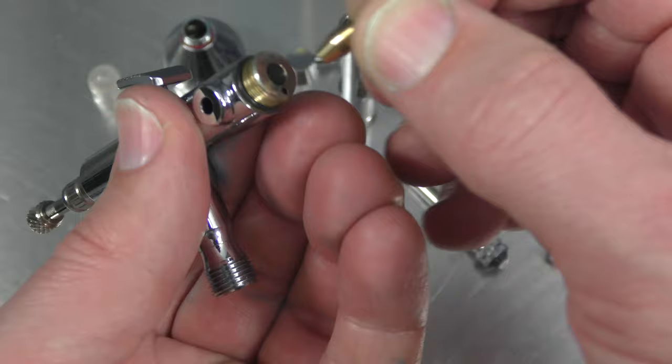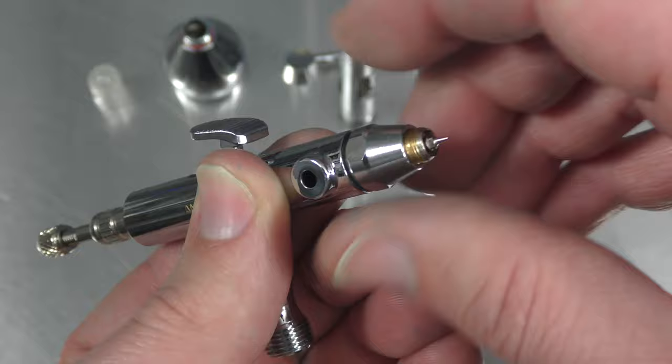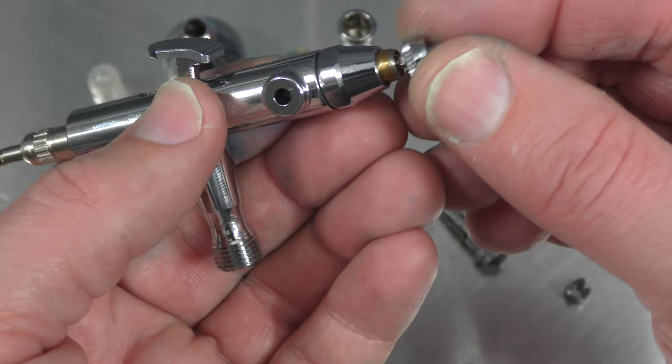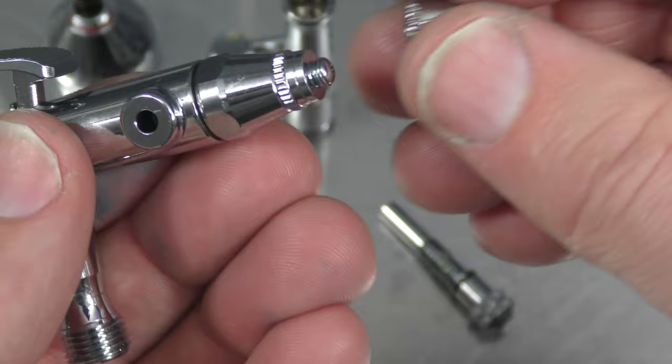The nozzle. Head assembly. You can use these again to tighten it a bit more. And this part over here. Crown cap.